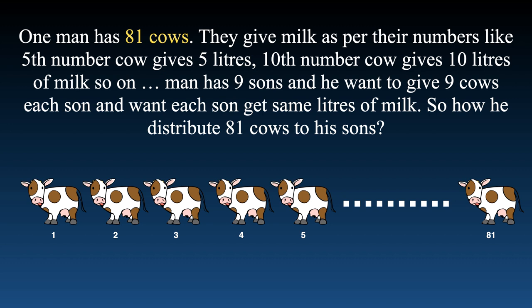Let me simplify the puzzle. A man has 81 cows numbered 1 to 81. Cow number 1 gives 1 liter of milk, cow number 2 gives 2 liters of milk, and so on. The man wants to equally distribute the cows among his nine sons so that each one of them gets the same quantity of milk. How does he distribute those 81 cows to his sons?